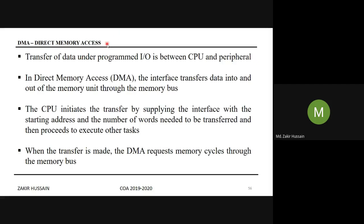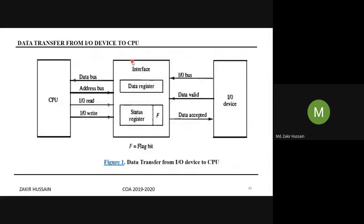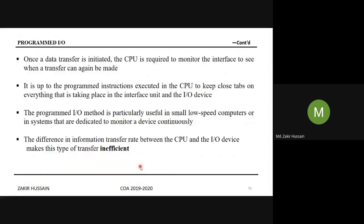This is Direct Memory Access. The transfer of data under programmed IO is between CPU and peripheral. There are three IO methods: programmed IO, interrupt-initiated IO, and direct memory access. These are the ways of data transfer that we are discussing here in this DMA topic.